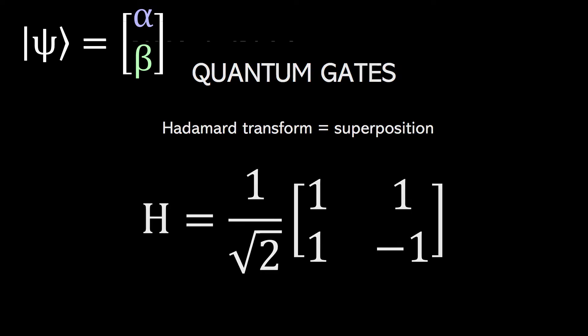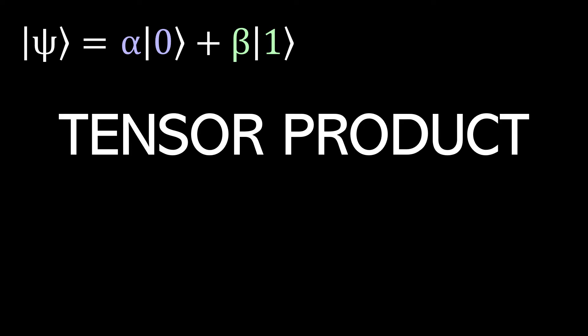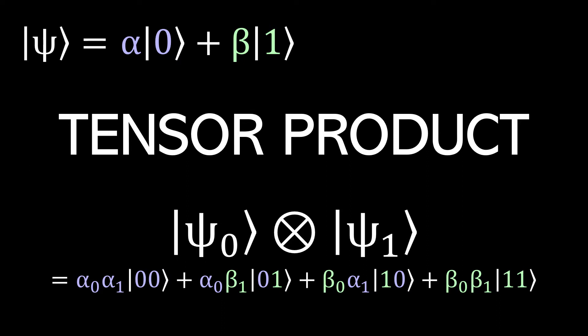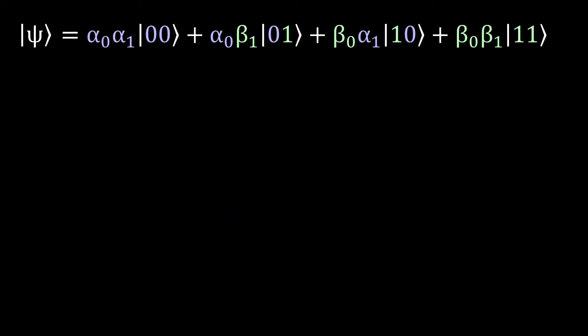So that's how you talk about a single qubit. What about multiple qubits? You use something called the tensor product, and the tensor product is exactly what it sounds like. You're literally multiplying the states, and then you have to normalize it because, remember, quantum states have to be unit vectors.